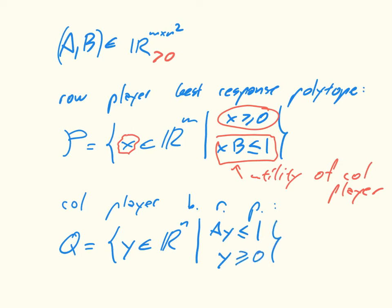So those are our two polytopes. And what we are now going to do is consider a little example where we play around with the matching pennies game. So if you remember the matching pennies game, we have A equals 1, minus 1, minus 1, 1, and B equals minus 1, 1, 1, minus 1.